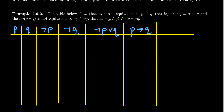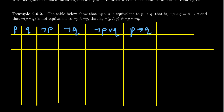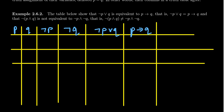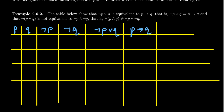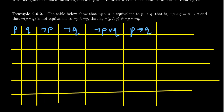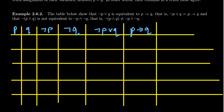Because we have two primitives, there are four rows for the four possible truth values we can have. The possibilities are going to be: true-true, true-false, false-true, and false-false.